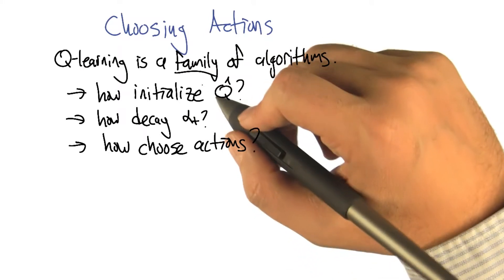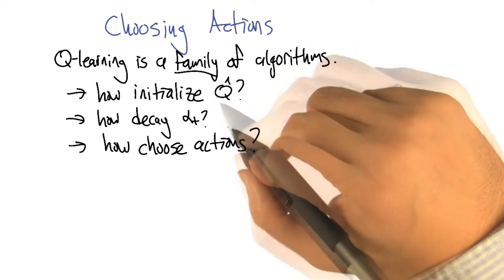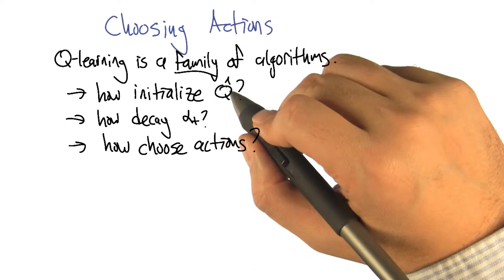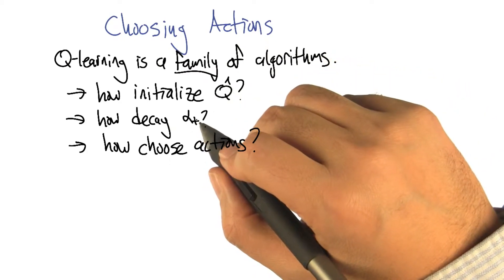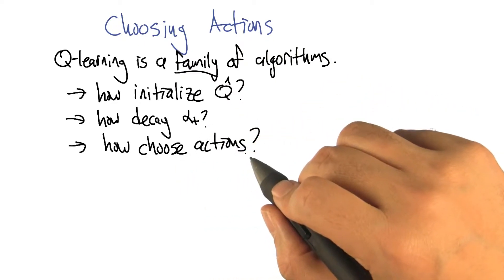And they vary typically along these three dimensions. How do we initialize our estimate, Q hat? How do we decay our learning rates, alpha sub t? And how do we choose actions during learning?